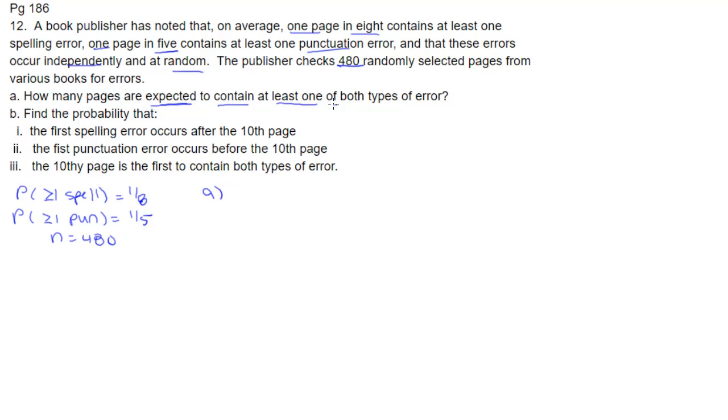Part A says how many pages are expected to contain at least one of both types of error. Well, both types of error is going to be the probability of spelling times the probability of punctuation, which is 1/8 times 1/5, which is going to be 1/40.